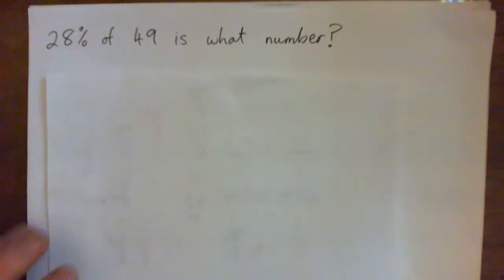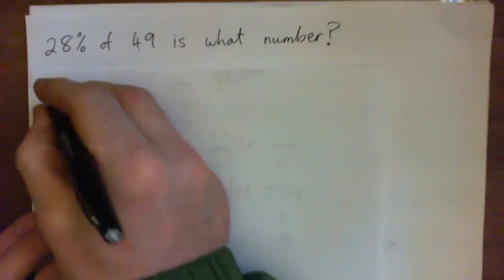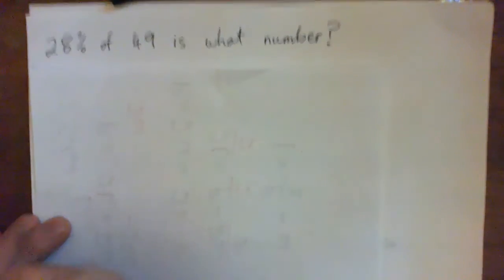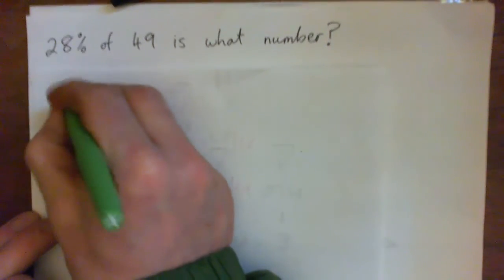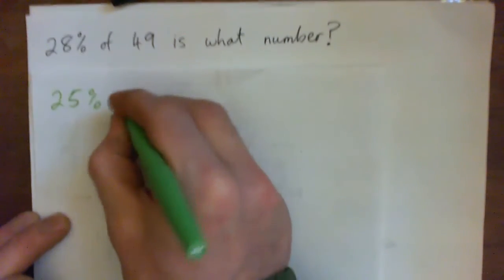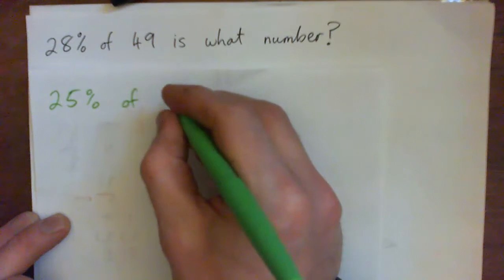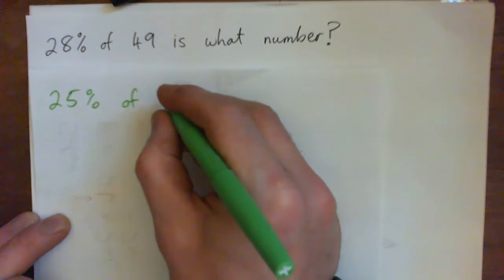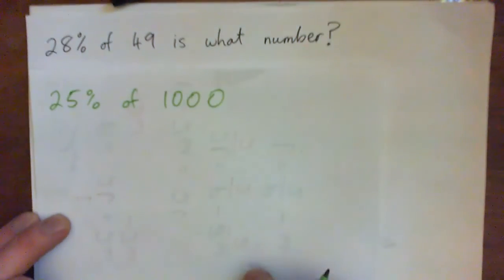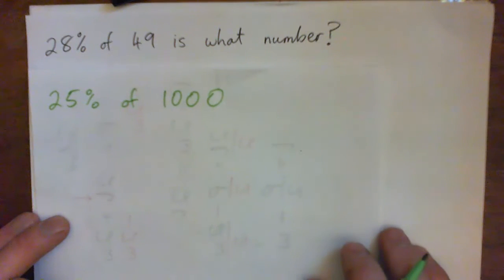So I'm just going to do a simpler one. Let's just do a simpler one just to get into the practice of this. Let's do get 25% of something easy, like 1,000. So we'll just get that first, alright?